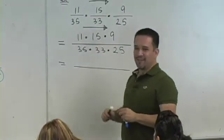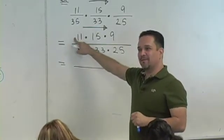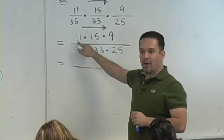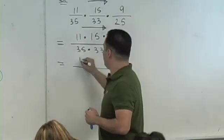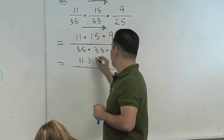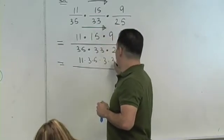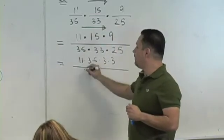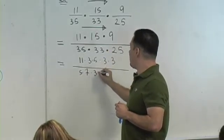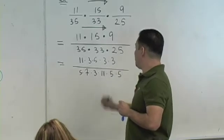What do you do instead? You break them down. So I'm on autopilot. Can you break 11 down? No, why not? It's prime. Can you break 15 down? Yes. How? 3 times 5. Can you break 9 down? Yes. 3 times 3. 35 is 5 times 7. 33 is 3 times 11. 25 is 5 times 5.